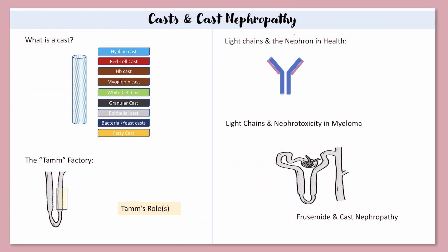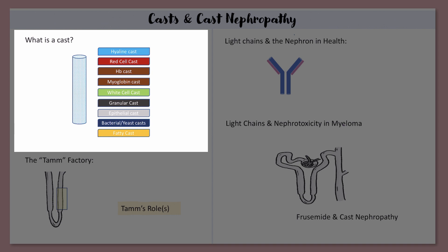What is a cast? A cast is just a cylindrical structure which is formed in the distal tubules and collecting ducts, and so essentially takes on the shape of the distal tubules and collecting ducts.